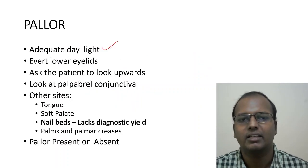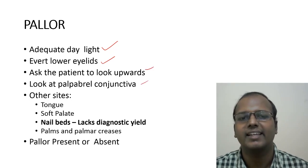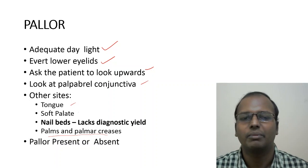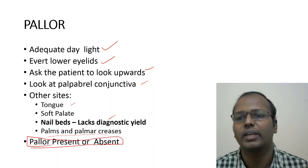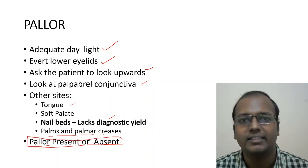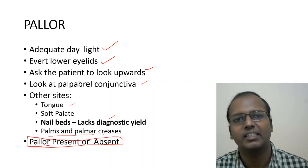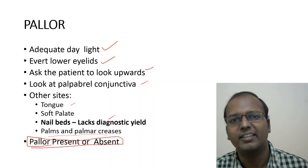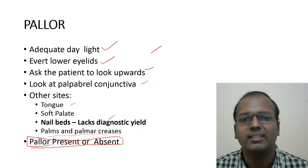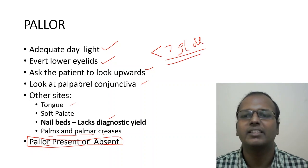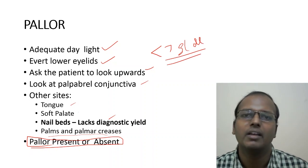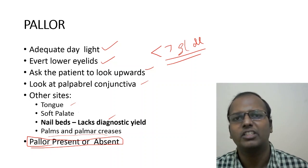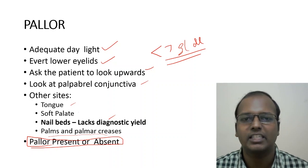How to examine pallor: use daylight, evert the lower eyelids and ask the patient to look upwards, and examine the palpebral conjunctiva. Other sites include the tongue, soft palate, palms, palmar creases, and nail beds — though nail beds lack diagnostic yield. Comment pallor present or absent. If the palmar crease is as pale as the surrounding skin, hemoglobin is likely less than 7 g/dL. If polycythemia is present, there will be a flushed appearance, and if only the head and neck are flushed, suspect superior vena cava syndrome.